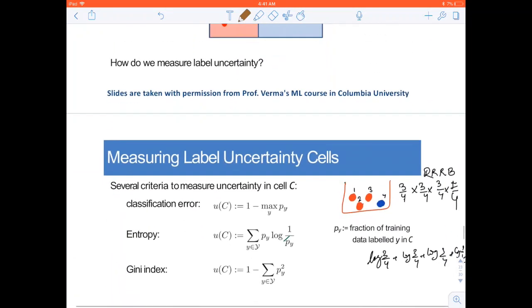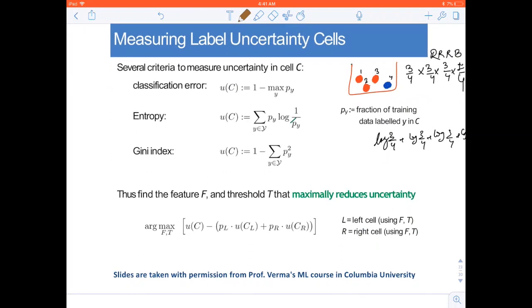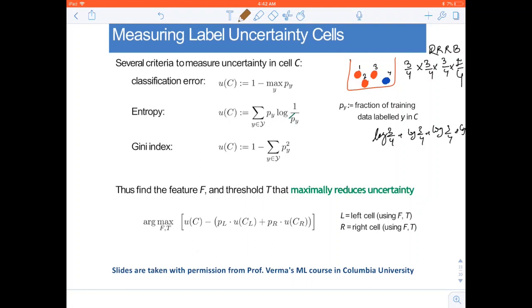But how are we measuring this uncertainty? To measure uncertainty in a cell, there are several criteria. First one we will discuss is the classification error. It is a very simple one: 1 minus the maximum probability amongst all the classes. If we have a population of males and females and in a particular region, all of the people are men, then the uncertainty would be 1 minus 1, which is 0. We have zero uncertainty because we know that if there is another person, it would also be a man. This is one of the very simple criteria.